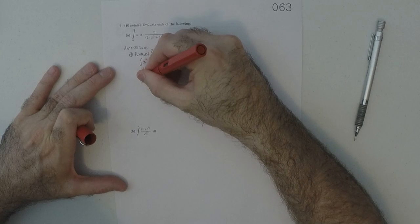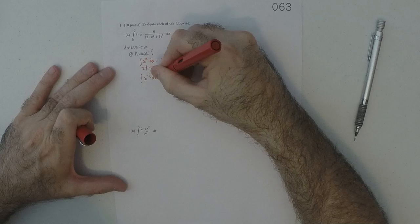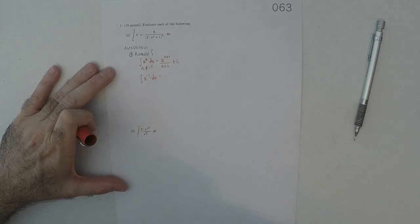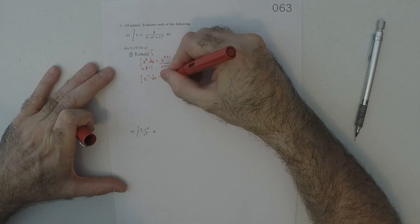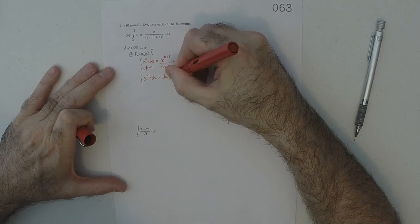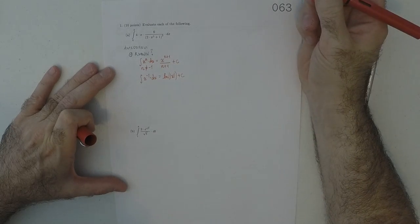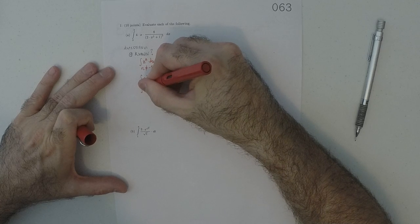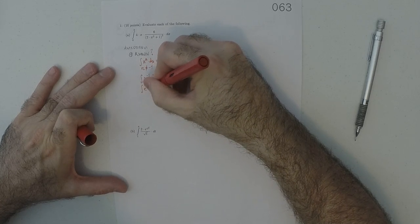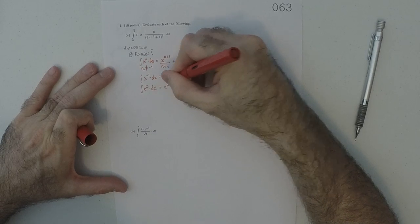We also know in the specific case when that exponent is negative 1, we know how to do that one as well, but it's just a lot different. So logarithm of absolute value of x plus a constant. And then the last one that we know is that the antiderivative of the exponential of x is the exponential of x plus a constant.